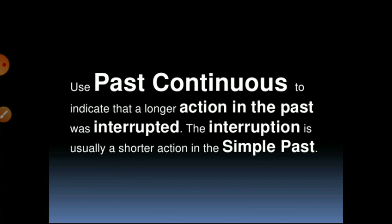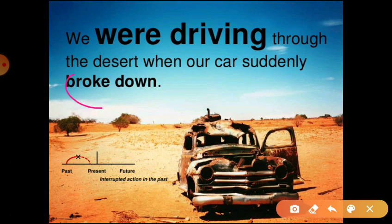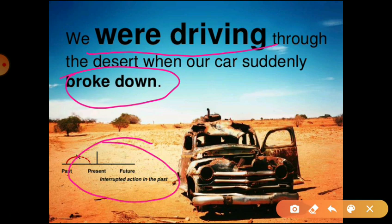Moving on to past continuous tense: past continuous is used to indicate that a longer action in the past was interrupted. The interruption is usually a shorter action in simple past. For example: 'When we were driving through the forest, our car suddenly broke down.' Here 'were driving' is past continuous and 'broke down' is past indefinite — an interruption in the action.